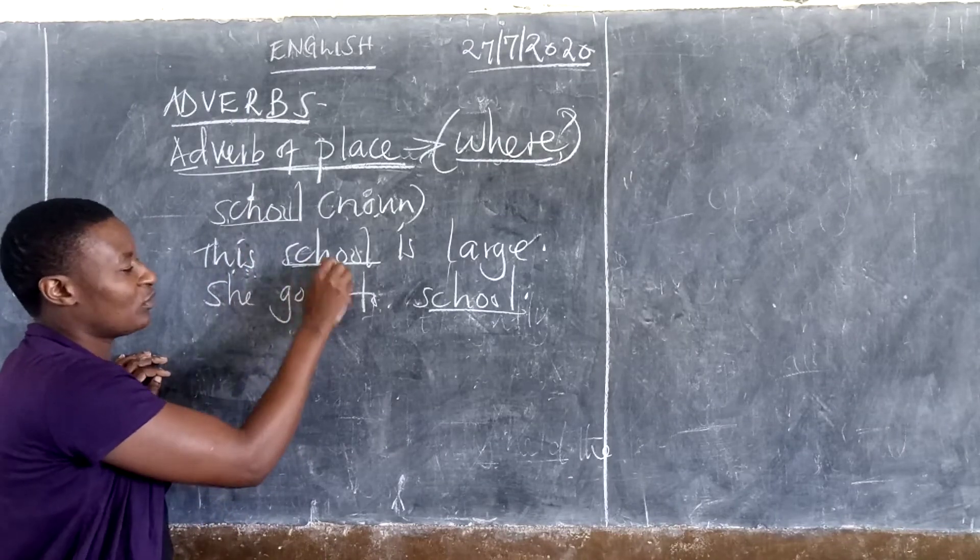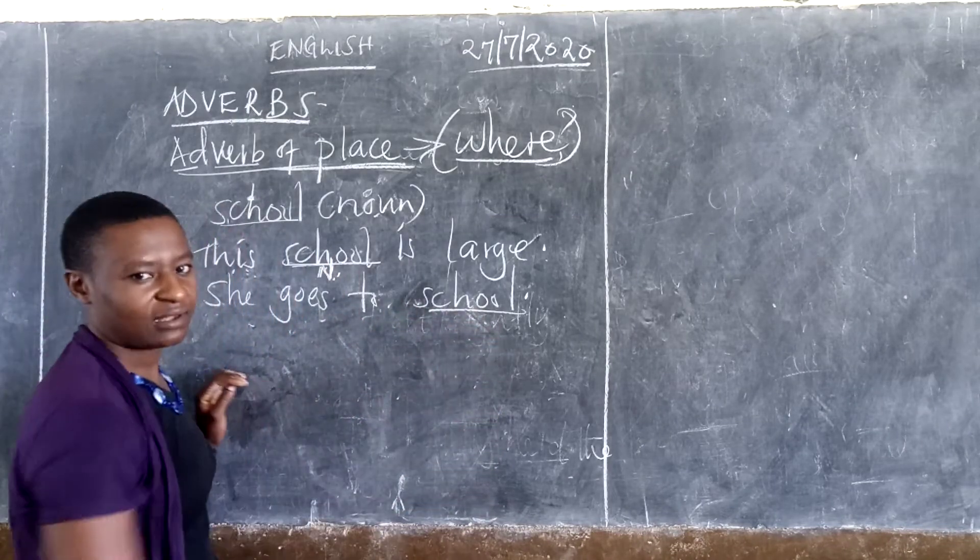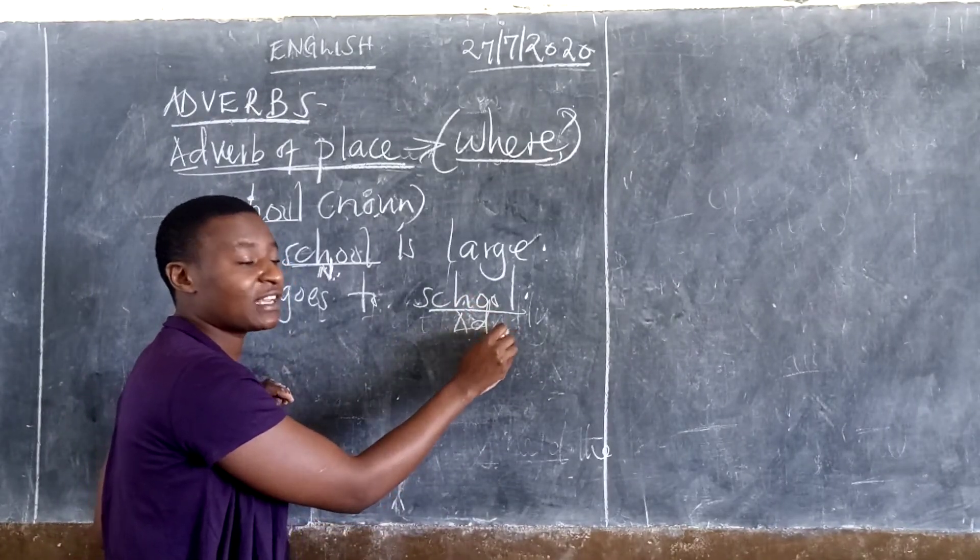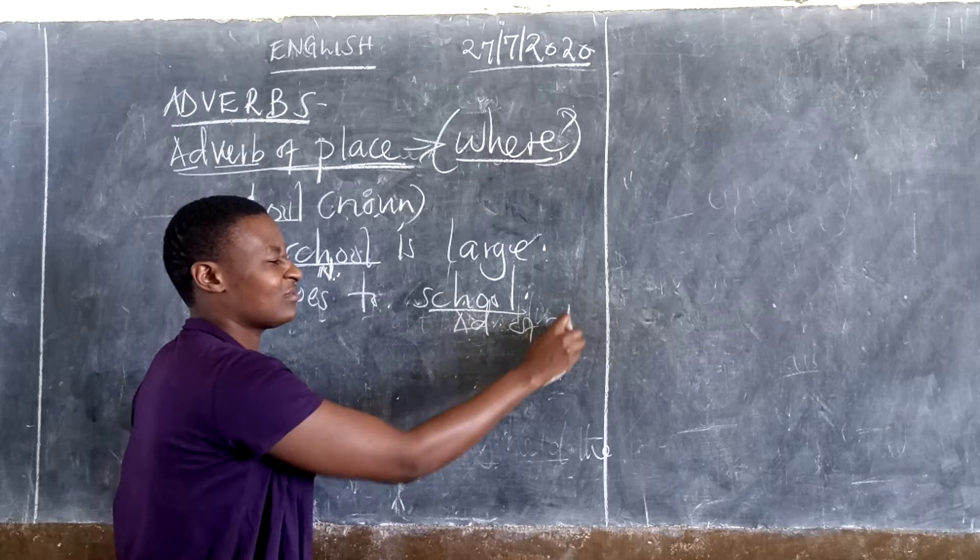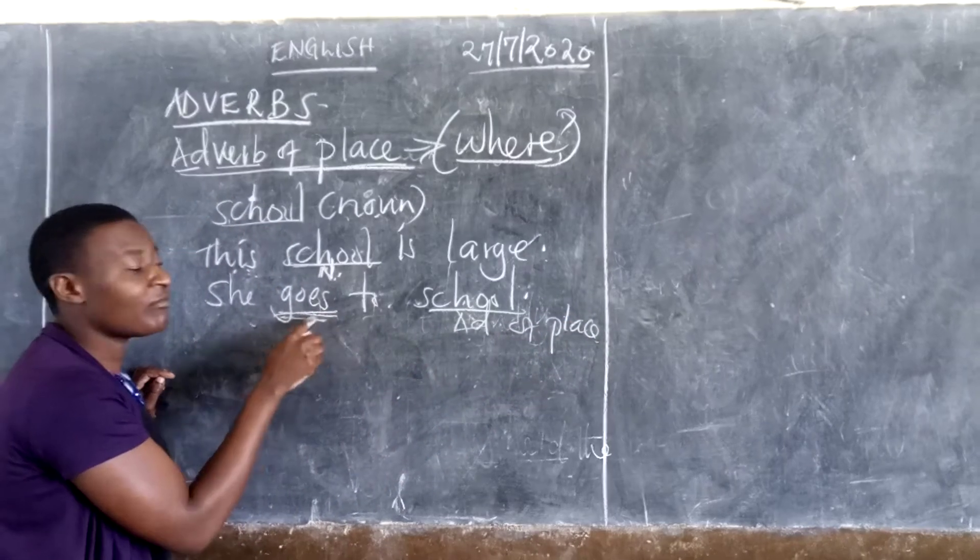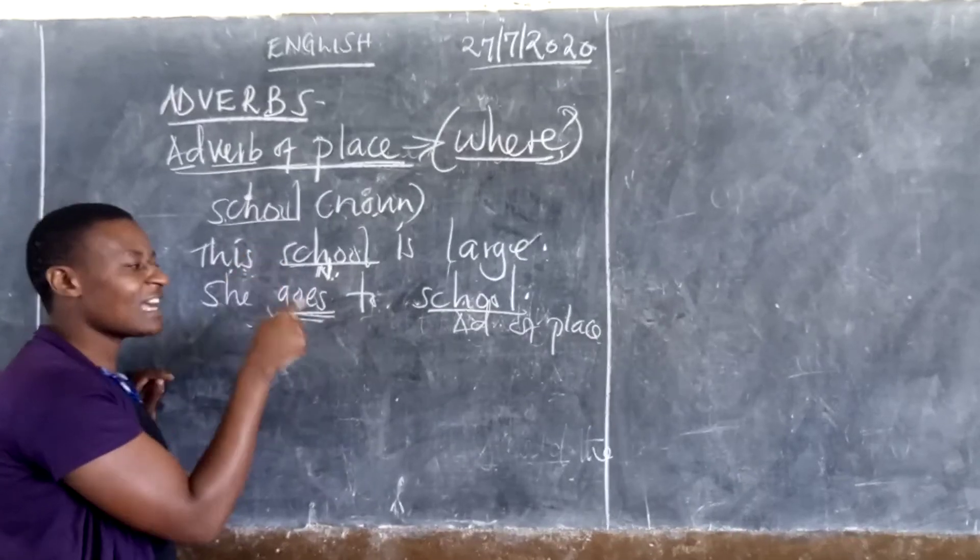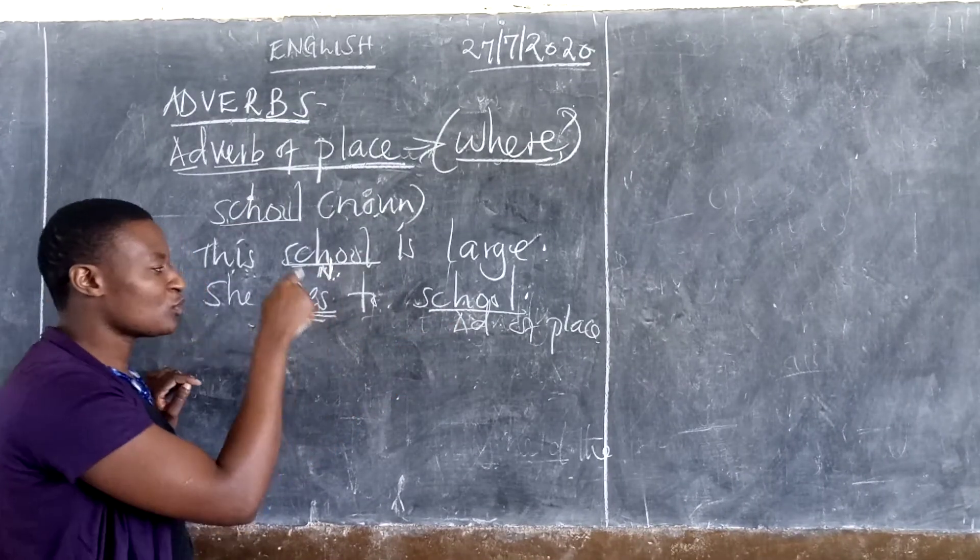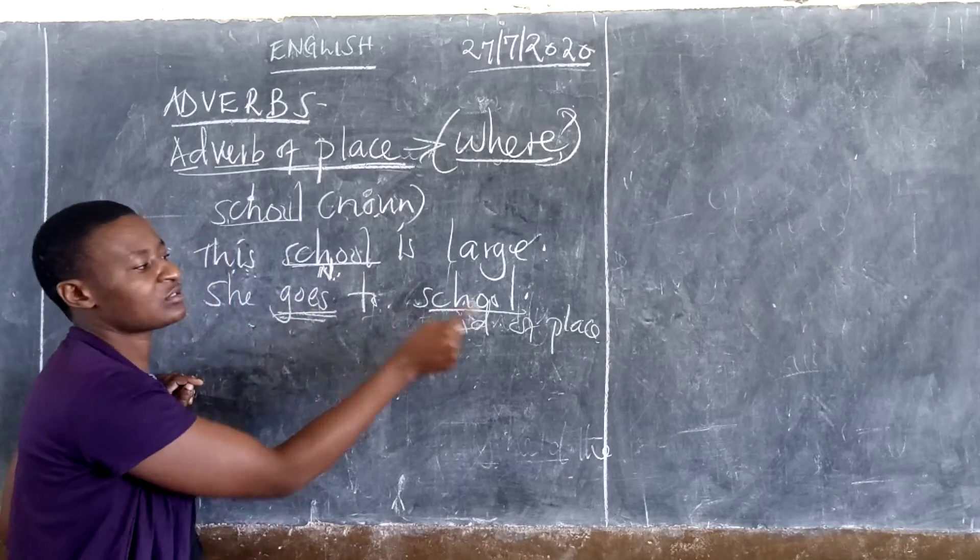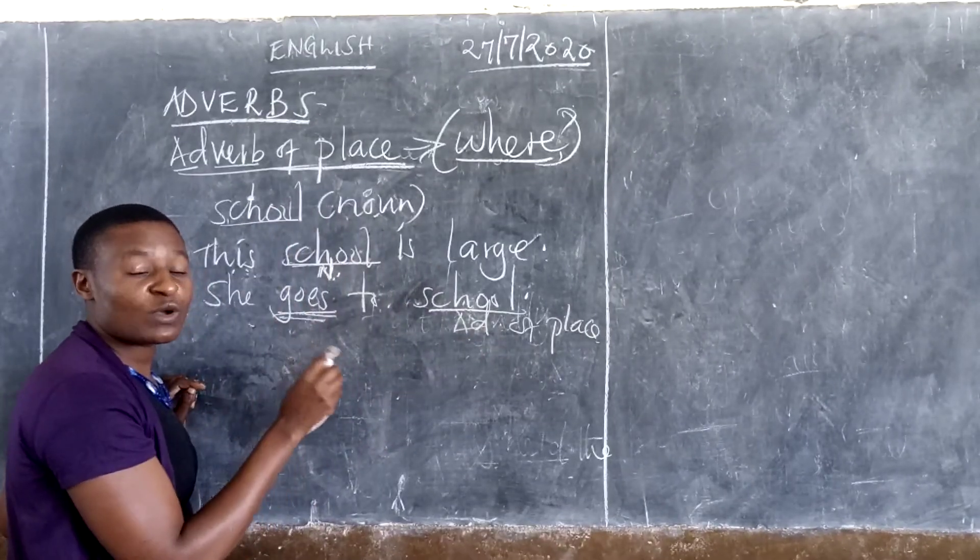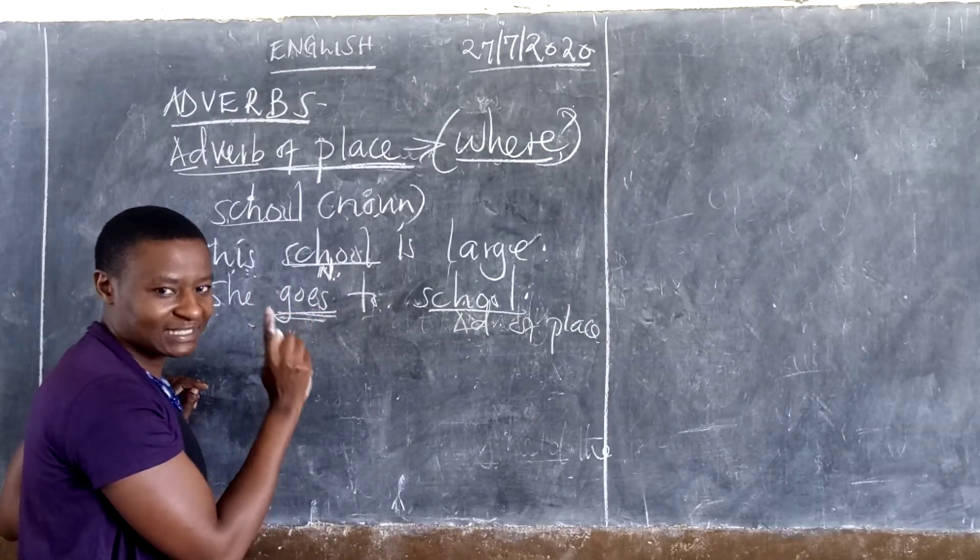This school is a noun. But she goes to school. She goes somewhere. This one becomes an adverb. And more specifically, of place. We are talking about a verb. There is an action that was done somewhere. So, this action was done somewhere. Where? School. So, this one becomes an adverb. It depends on the way this word has been used in a sentence.